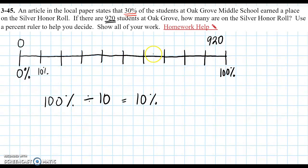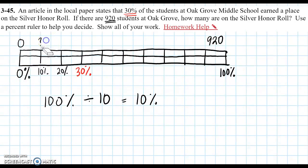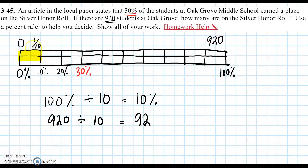Now we have equally spaced intervals that are all 10%. So 10%, 20%, and then this is our magic one that we're looking for: 30%. Now, if we divided our number line into 10 equal parts, I could find out how many students 10% would be by doing the same thing. Taking the whole as one — like a bar model for area and fractions — this would be just 1/10, 1 out of 10. So if I take 920 students and divide that by 10, I'll find out how many students are there. That ends up being 92 students. So 92 students makes up 10%.